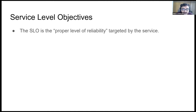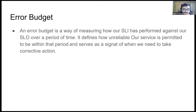The SLO is the proper level of reliability targeted by the service. Continuing the example: if we didn't hear any complaints on the day we had 99.97% page load success, we could infer that users are happy as long as we hit that 99.97% metric. So in this case, 99.97% becomes the SLO. An error budget is a way of measuring how our SLIs perform against our SLOs over a period of time. It defines how unreliable our services are permitted to be within that period and serves as a signal of when we need to take corrective action.